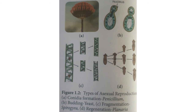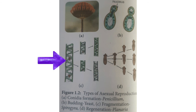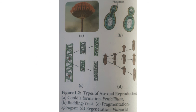The third type is fragmentation, found in algae called Spirogyra. The Spirogyra forms fragments — small segments. Each fragment develops into a new individual. That is called fragmentation.